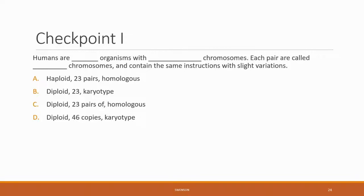And this brings us to checkpoint one. Humans are blank organisms with blank chromosomes. Each pair are called blank chromosomes and contain the same instructions with slight variations.